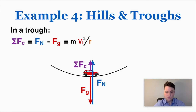When a problem asks for the minimum speed around a loop, it means: what velocity makes the net force equal to the force of gravity at the top? At minimum velocity, the normal force at the top equals zero. At the bottom at this same minimum velocity, the centripetal force equals gravity, but since they point in opposite directions, the normal force must be two times the force of gravity. On the side, the normal force equals the centripetal force, which equals gravity. These are only true at the car's minimum possible velocity.